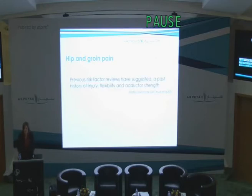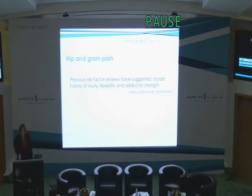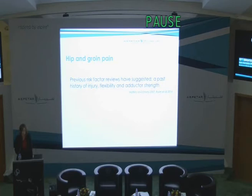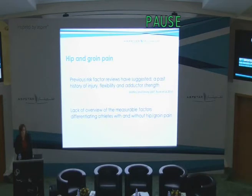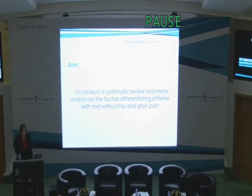So we've just heard about hip and groin pain. We've had two recently published systematic reviews looking at risk factors. Jackie will now publish a more recent update, and it's interesting that with the update we haven't actually got any more answers about risk factors. But it's been identified that a past history of injury, some conflicting evidence on flexibility and adductor strength, have been identified as risk factors. However, these systematic reviews do not provide an overview of measurable factors that can differentiate athletes with hip and groin pain from those without. So that's the aim of our systematic review: to conduct a systematic review and meta-analysis on the factors that we can use to differentiate athletes with and without hip and groin pain.